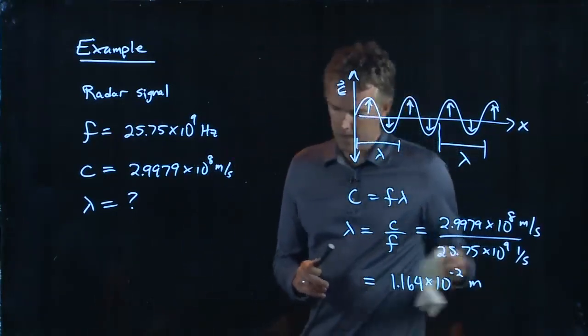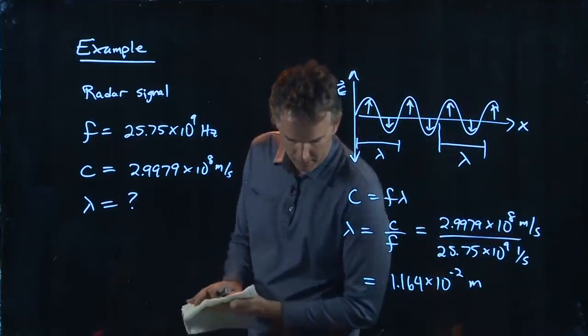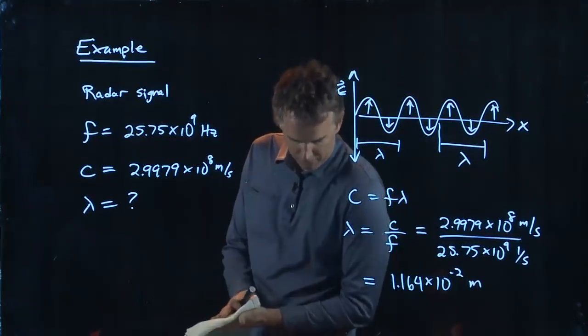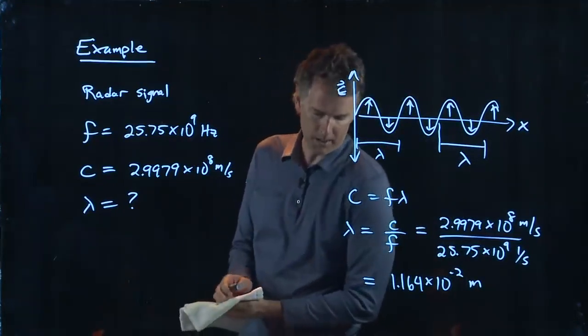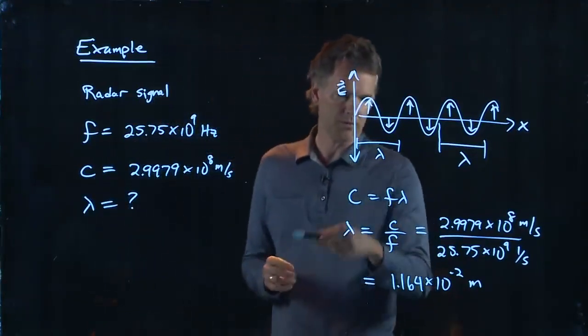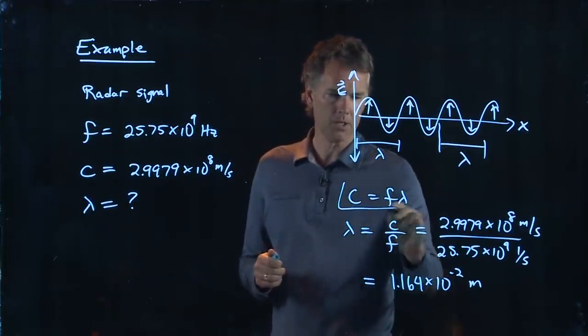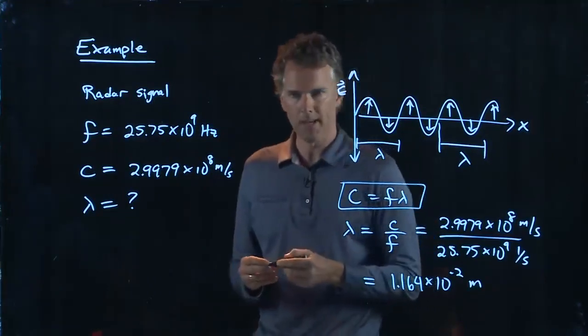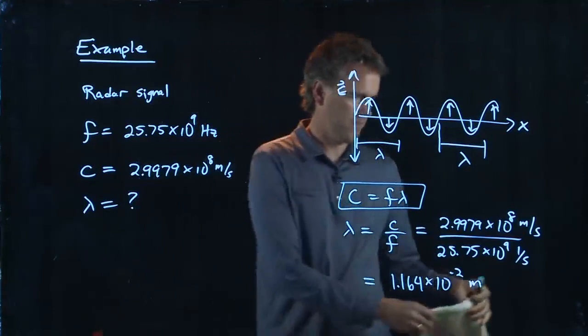And now as a follow-up to part B, it says what's the frequency of an x-ray with wavelength 0.11 nanometers. So that one you can handle on your own. You're of course going to use the same relationship. C is equal to f lambda. But there's an important point here.